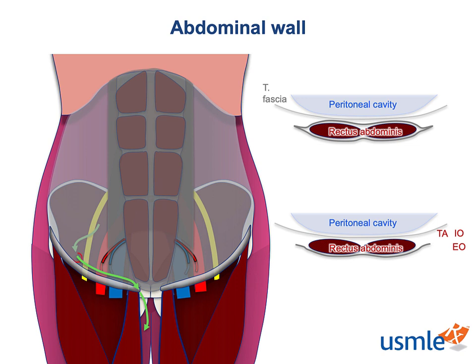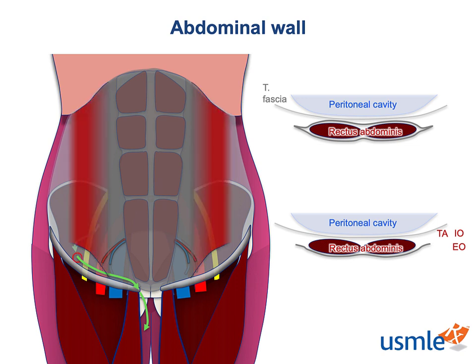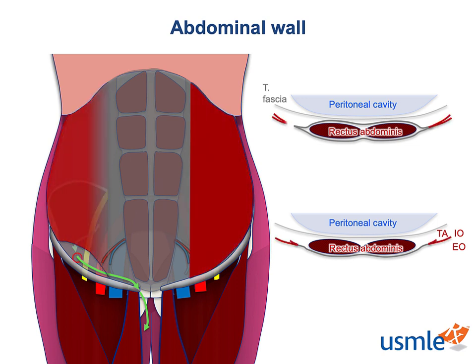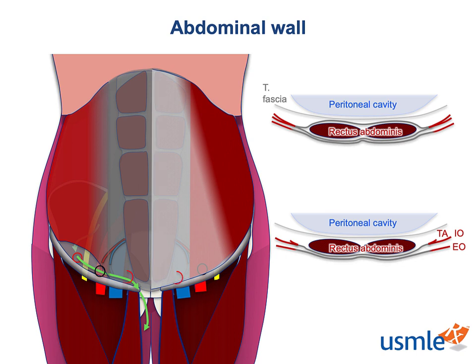The first hole is in the transversalis fascia. The transversus abdominis and internal oblique muscle wrap around, and their aponeuroses merge in the middle to form the rectus sheath. Because of how the transversus is shaped, it doesn't need a hole punched in it, but the internal oblique does. So does the external oblique, which wraps around to form a distinct aponeurotic layer that makes up the most superficial part of the rectus sheath. All three holes are connected by a tunnel that leads directly to the scrotum called the inguinal canal.